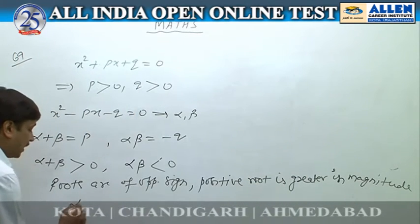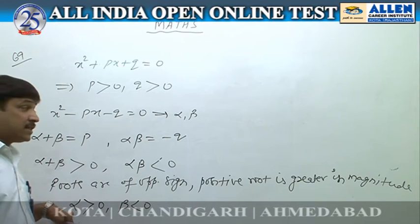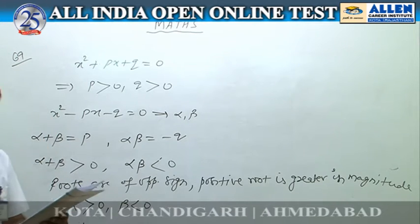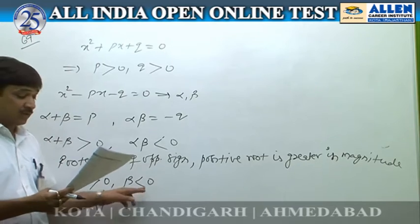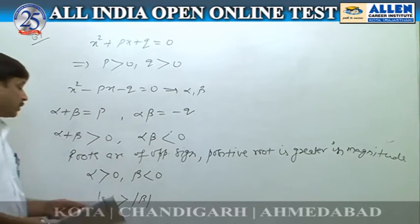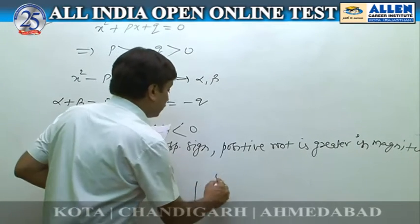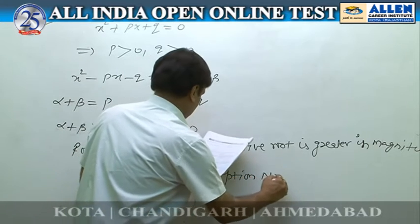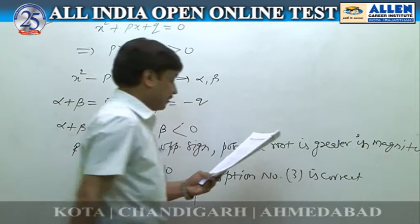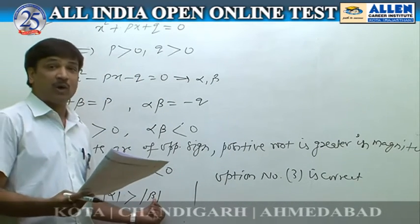So we can say alpha is positive and beta is less than zero. Since the positive root is greater in magnitude, modulus of alpha is greater than modulus of beta. According to the given options, option number 3 is correct: alpha is greater than zero, beta is less than zero, and |α| > |β|.